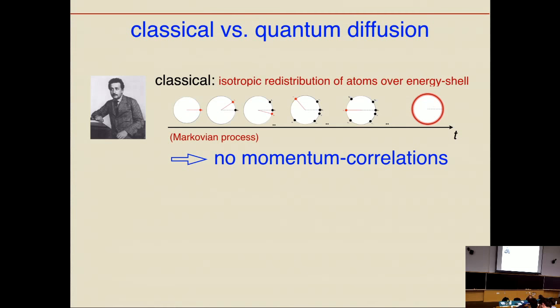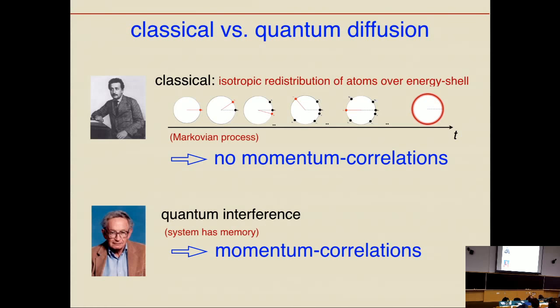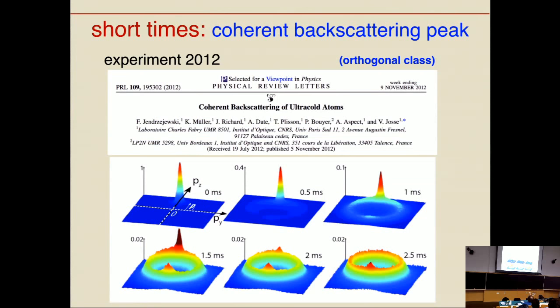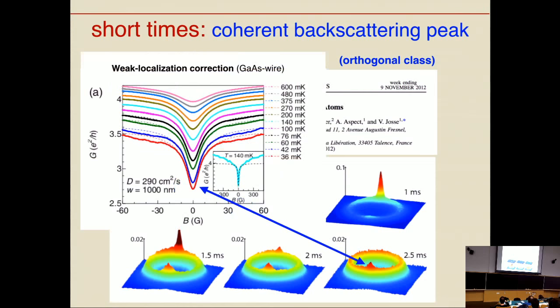Classically you have a diffusion process, which is Markovian — you do not keep any memory of the initial states and no momentum correlations build up. In the quantum case, quantum interference means the system can keep some memory. Looking at the experimental outcome from the Aspect group: you see the distribution of the initial state where all cold atoms occupy one momentum, and after a few elastic scattering times most cold atoms redistribute over the energy shell, but simultaneously a peak appears in the backscattering direction — a coherent backscattering peak.